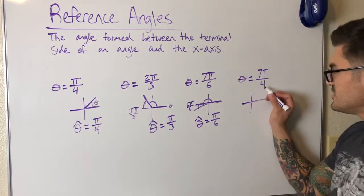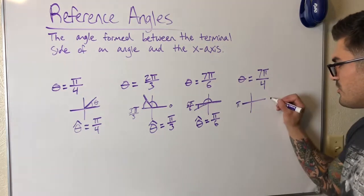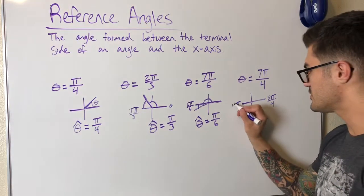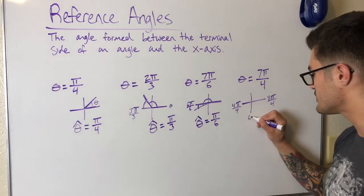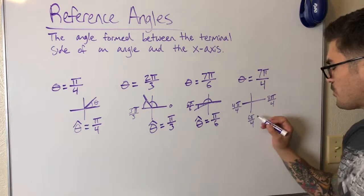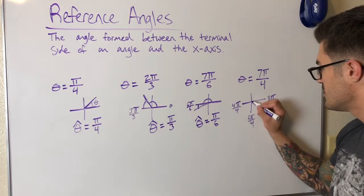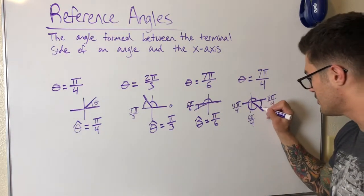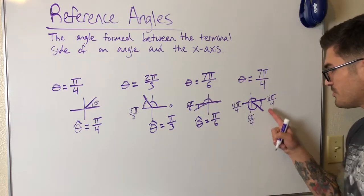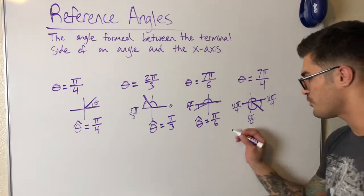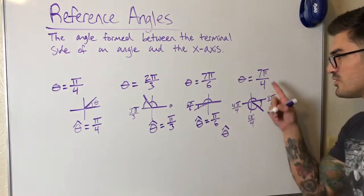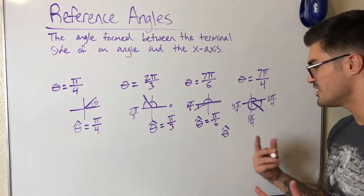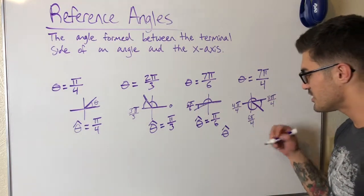For seven pi over four, I sketch it quickly. This is pi equals four pi over four, three pi over two equals six pi over four, and two pi equals eight pi over four. So seven pi over four sits between six pi over four and eight pi over four, in the fourth quadrant. The angle between the terminal side and the x-axis is pi over four short of the full two-pi rotation, so the reference angle is pi over four. When in doubt, rewrite everything with a common denominator and the reference angle becomes much clearer.